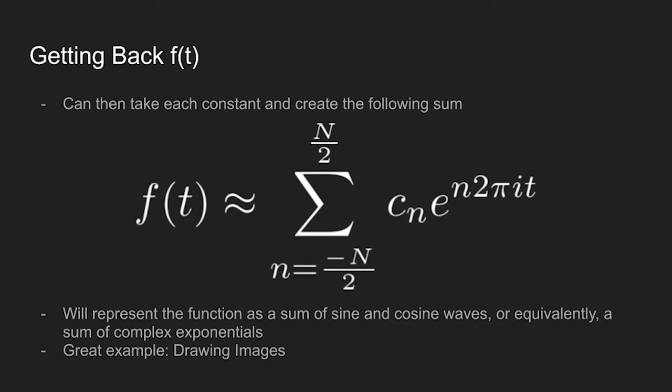Now that we have a giant list of constants, we want to be able to use them to recreate an estimation of our original function. And we use that as a sum of sine and cosine waves, or equivalently, a sum of complex exponentials.